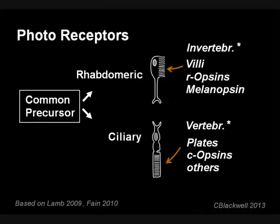To recap, the ciliary opsins are located in the rods and cones and mediate light and color sensation, otherwise known as vision. Melanopsin is a rhabdomeric opsin. Until recently, it was thought the rhabdomeric branch existed solely in invertebrates, while the ciliary type was confined to only vertebrates. The discovery that there was melanopsin in the human eye and ciliary opsins in invertebrate eyes was a surprise. That these two lines exist together turns out to give us clues about the origin of retinal structure.